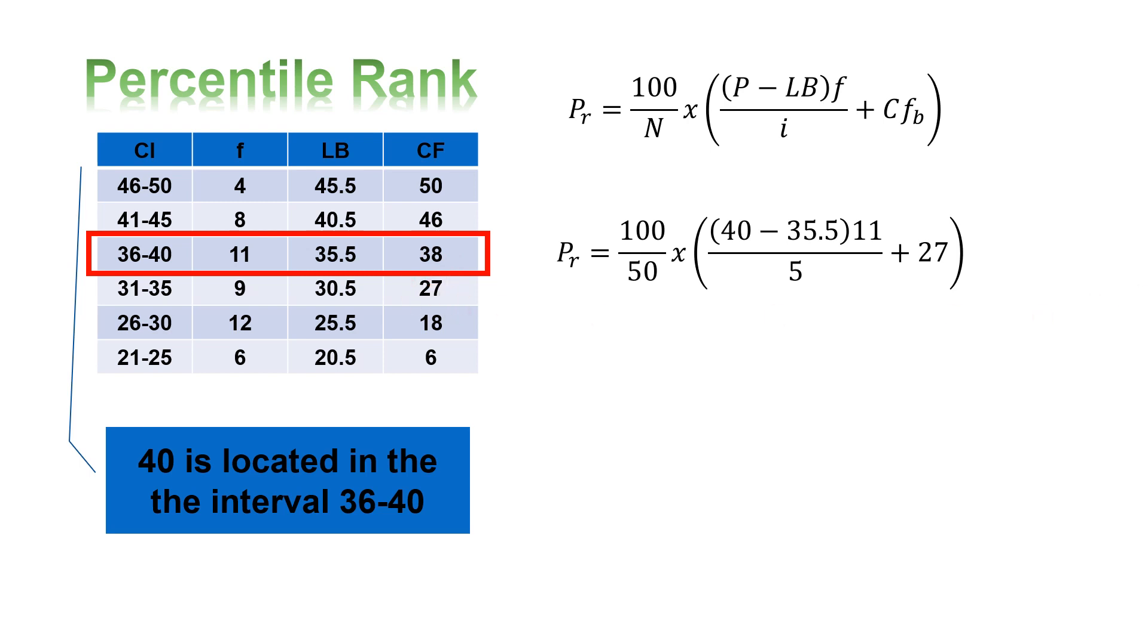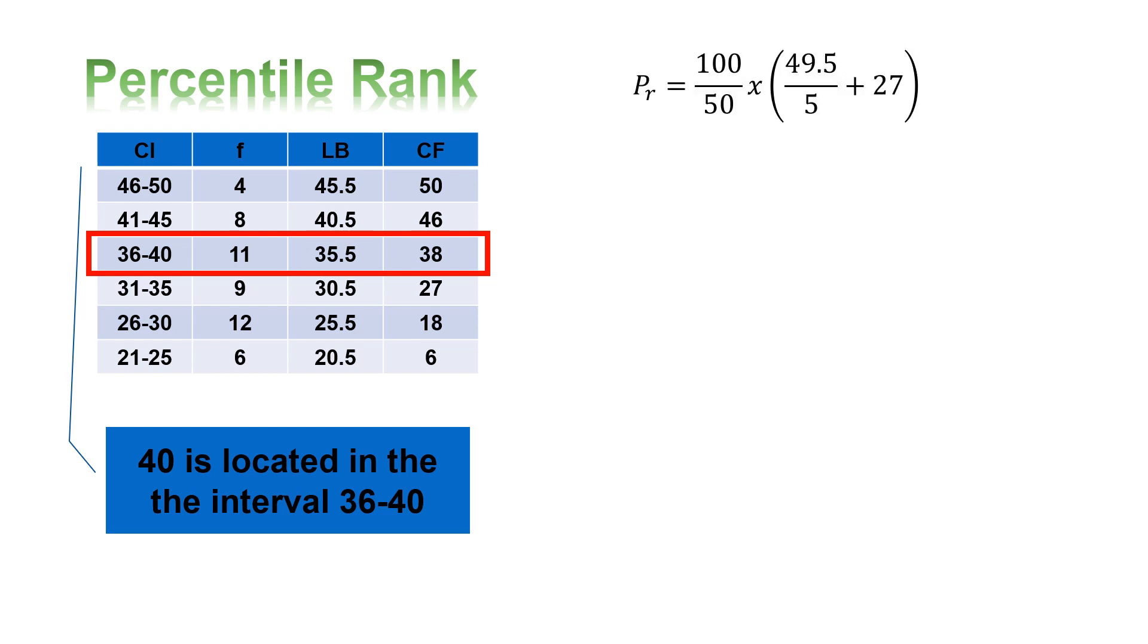Let's solve what's in the parenthesis first. So, 40 minus 35.5 is 4.5, times 11, that will give us 49.5. Next, 49.5 divided by 5 will give us 9.9, plus 27 will give us 36.9.